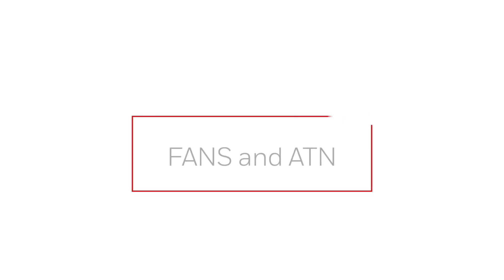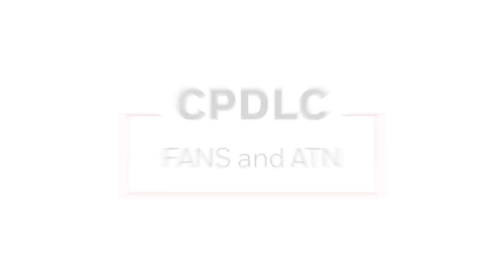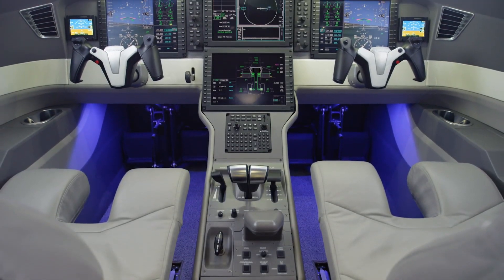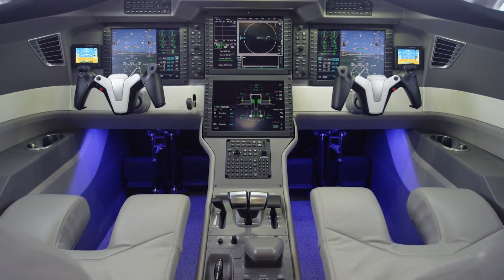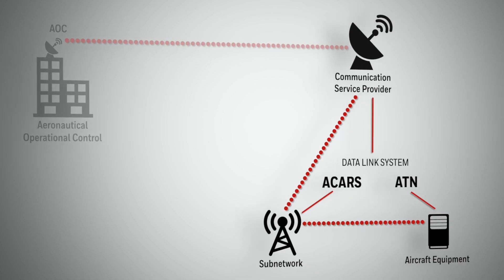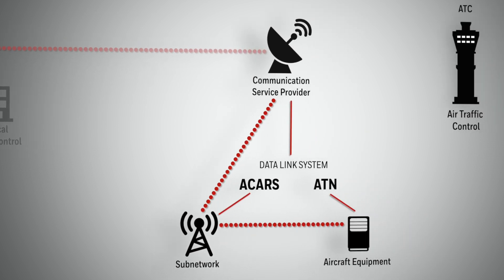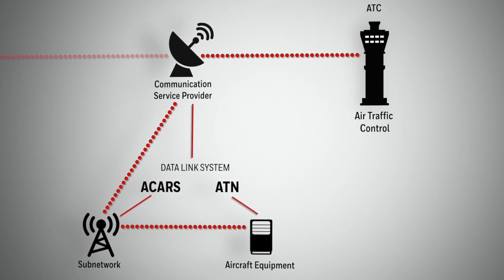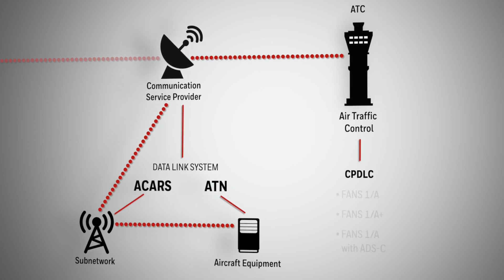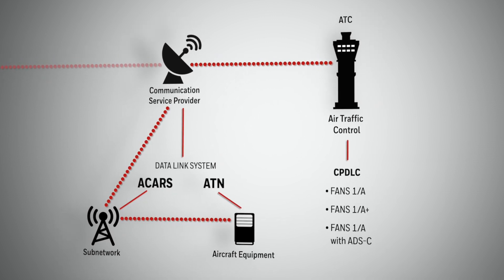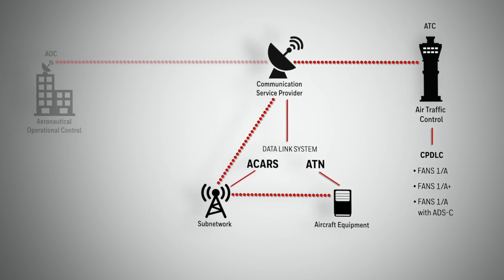Currently, there are two versions of CPDLC: FANS and ATN. Although an aircraft can be equipped to use both systems, the systems are not compatible with each other, and you can only use one system at a time. FANS uses the ACARS network, along with SATCOM and VHF. There are multiple versions of FANS, each providing similar services with minor differences in features, such as a message latency timer.